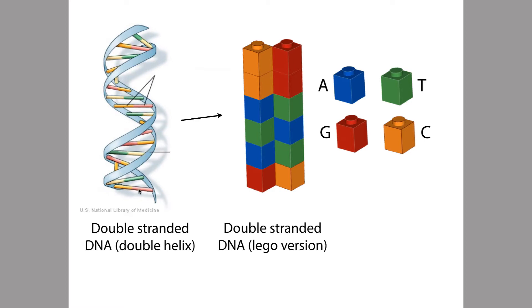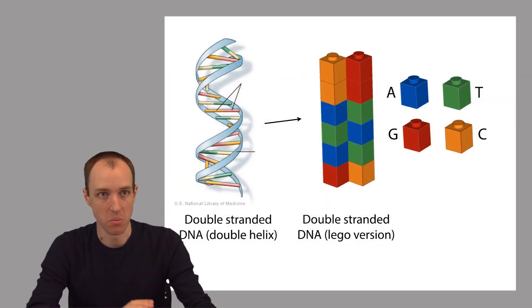So when a cell in your body divides to form two daughter cells, the genome in the cell gets copied. Every cell in your body just about has a copy of your genome, so when one of these cells divides it needs to pass on a copy to each of the offspring cells.